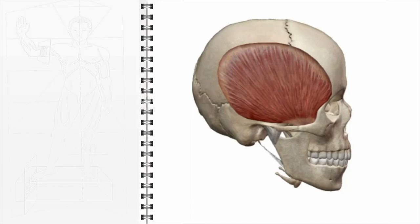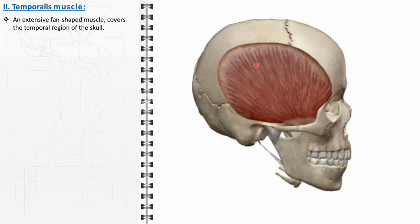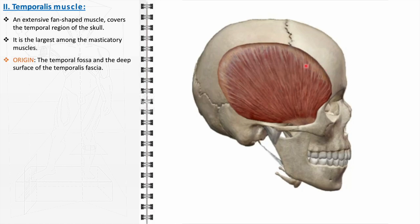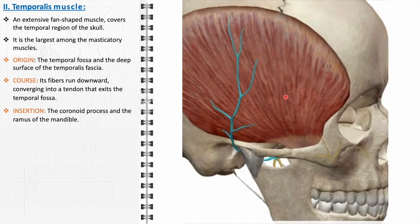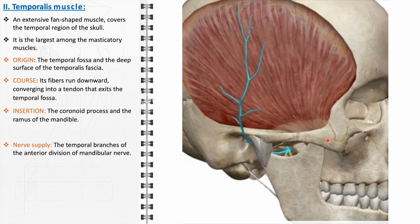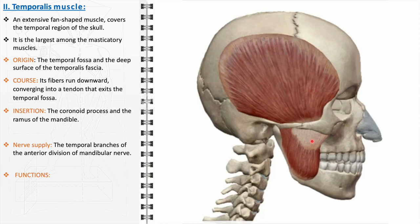Beginning our exploration with the temporalis muscle, we note its extensive fan-shaped structure, making it a prominent feature in the temporal region of the skull. As the largest muscle in this group, it plays a crucial role in the mechanics of jaw movement. Originating from the temporal fossa and the deep surface of the temporalis fascia, its fibers converge into a tendon that inserts onto the coronoid process and the ramus of the mandible. It is innervated by the temporal branches of the anterior division of the mandibular nerve, a branch of the trigeminal nerve.